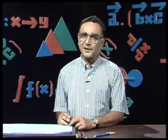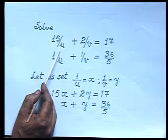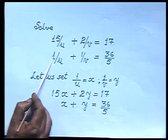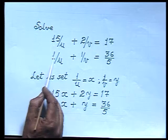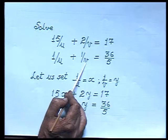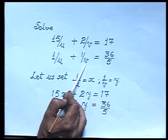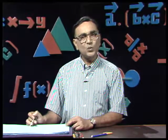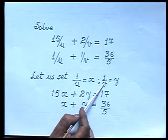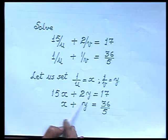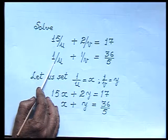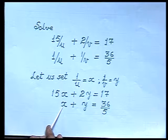Here we have to solve: 15/u plus 2/v equals 17 and 1/u plus 1/v equals 36/5. This system is not linear. To convert it, let 1/u equal x and 1/v equal y. So 15/u becomes 15x and 2/v becomes 2y, giving 15x plus 2y equals 17. The second equation becomes x plus y equals 36/5.